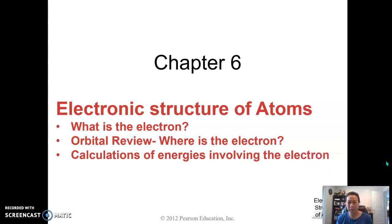Hello. So I think this lecture might be split up into three sections. I'm going to focus on three things from Chapter 6 on the electronic structure of atoms. First thing I'm going to focus on is what is the electron. Then I'm going to go over some orbital review and talk about where is the electron located. And then the last thing I'm going to show you is calculation of energies involving the electron.